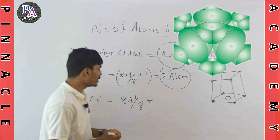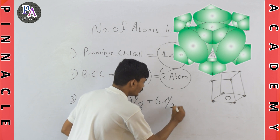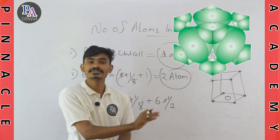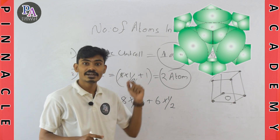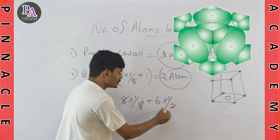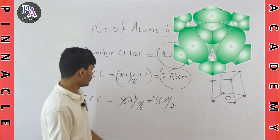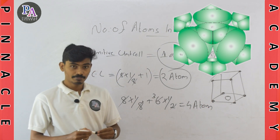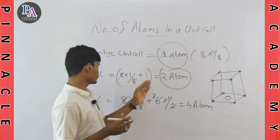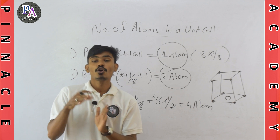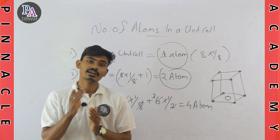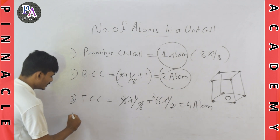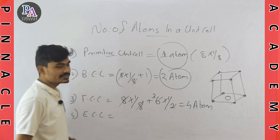That is 6 × 1/2. Six faces, each contributing 1/2 of one particle towards the unit cell. So we calculate: 8 × 1/8 from corners, plus 6 × 1/2 from faces. That gives 1 + 3 = 4 atoms total in the face-centered cubic unit cell.